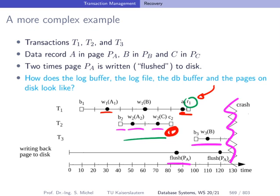We have to write out not only the entries for transaction T2 but also the older log entries not yet written to disk. We see two flush operations where contents are written back to disk. The Write-Ahead Log principle says: before making a change on persistent storage, you must keep a note of it — meaning before we change page pa on disk, we must write the corresponding log entries to the persistent log file.